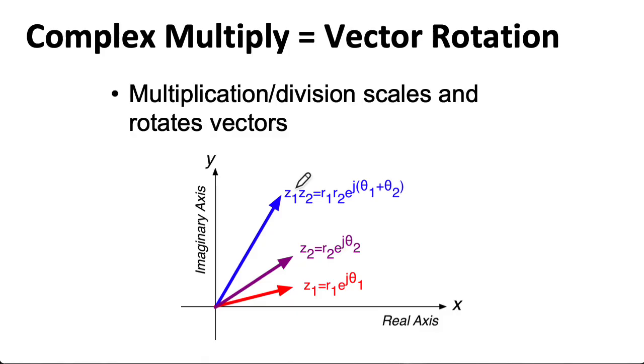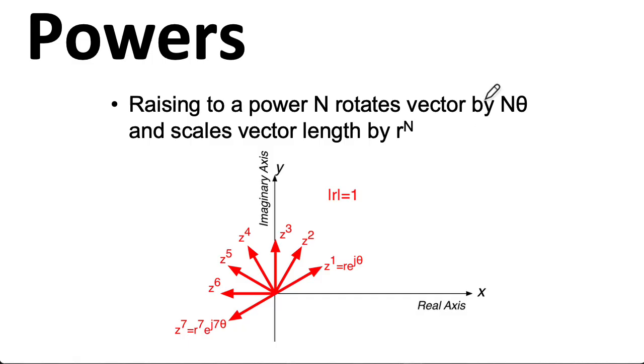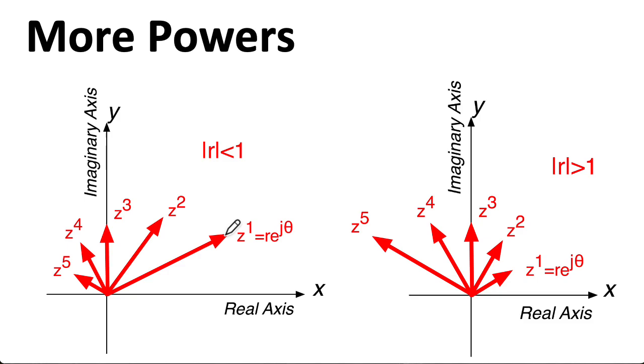We can think about complex multiplication as scaling the length of a vector and as rotating a vector. This gives us a way of interpreting power operations. A power is just a repeated multiplication. So taking a complex number to a power corresponds to repeated rotations. In this particular example, the magnitude of our vector is 1, so it maintains the same length. If the magnitude was less than 1, then the vector would shrink as it rotates. If it's greater than 1, it would lengthen as it rotates.